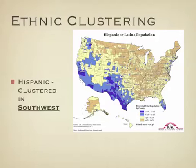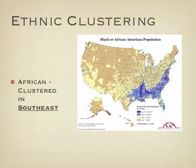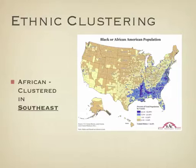The next map deals with the Black or African American population. You can see a large concentration in the southeast. Interestingly, and we'll talk about this in a bit, you can also see some pockets in major cities. But besides those cities, the southeast is where they're primarily clustered together.